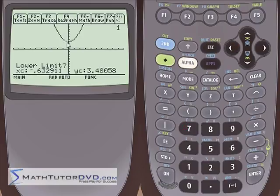We have to pick two numbers, a lower limit and an upper limit, and it'll find the area under the curve between those two points. Now you can find a trace point and do that, but if you have an exact point, you can just type it in. Negative 1 for the lower limit. Hit enter.